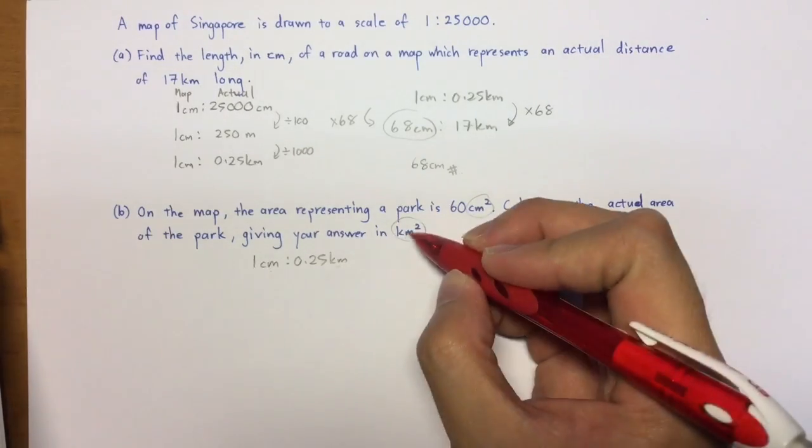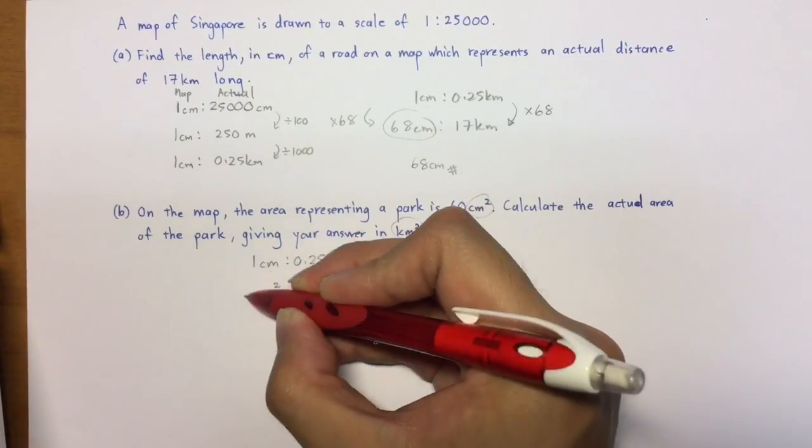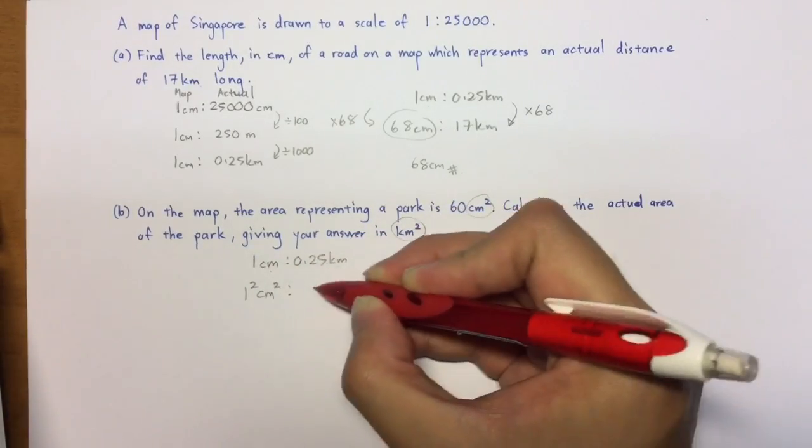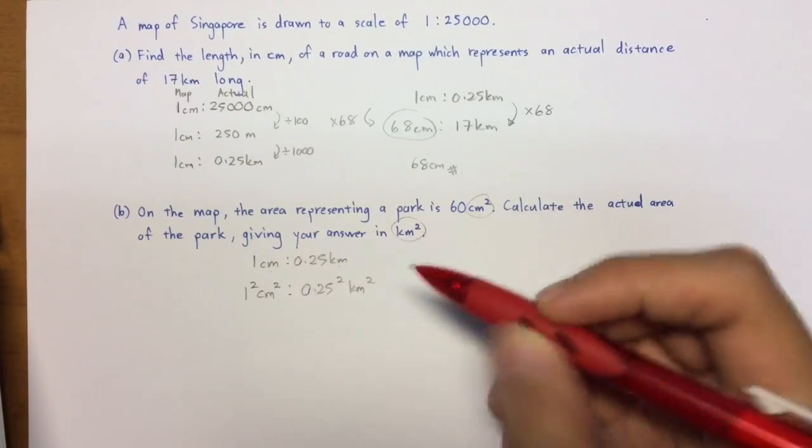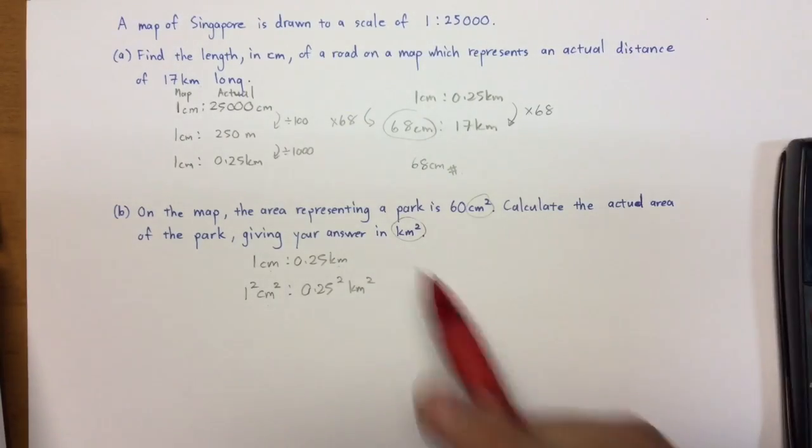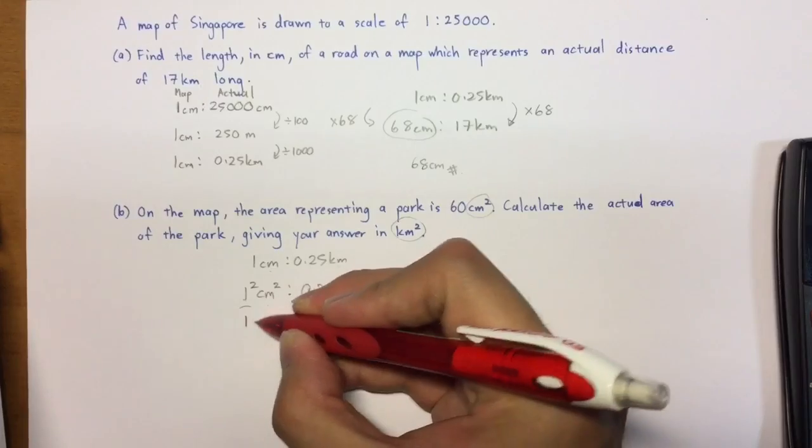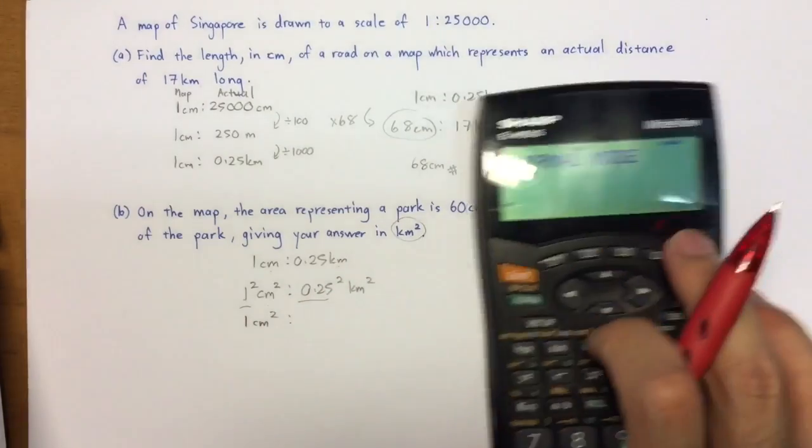So how exactly do I do that? If I want to change it to cm², I'll actually have to square everything here. Likewise, I'm going to square every single number here. And you realize that actually I've changed the units to cm² to km². So what happens next is just really evaluating these two numbers here. 1 square obviously is still 1 cm².